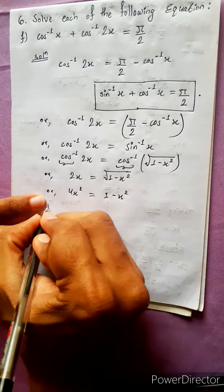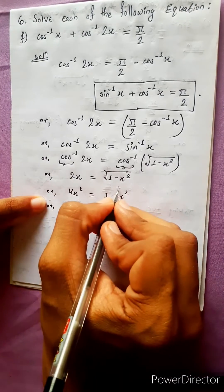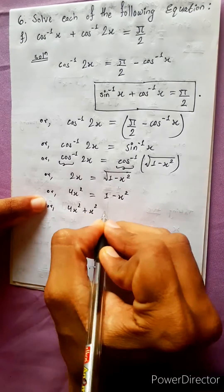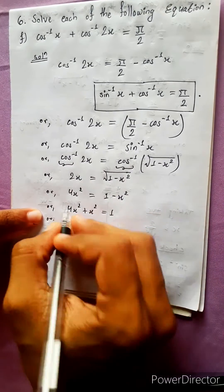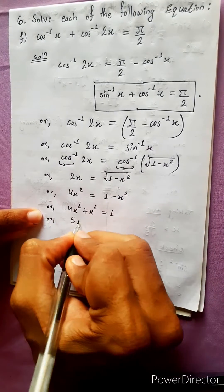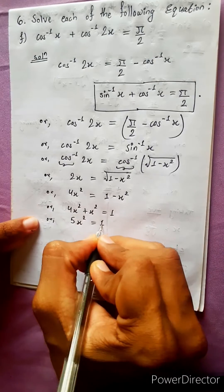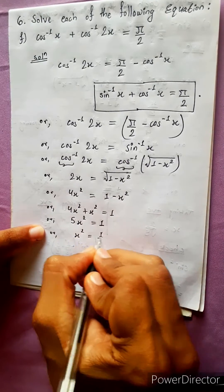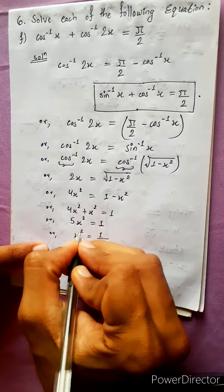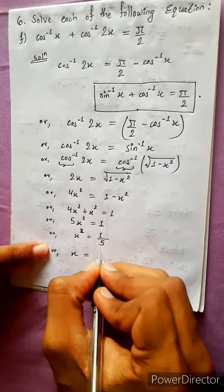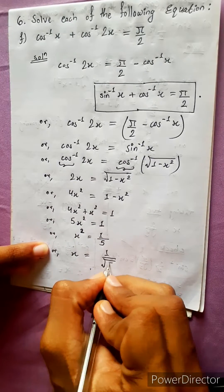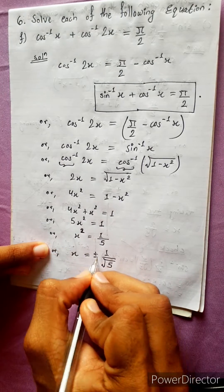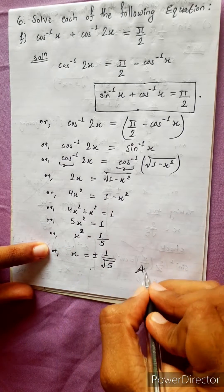1 minus x square, so x square plus 4x square equals to 1. Therefore 5x square equals to 1, and x square equals to 1 by 5, giving x equals to 1 over root 5. Possible answer: plus or minus 1 over root 5.